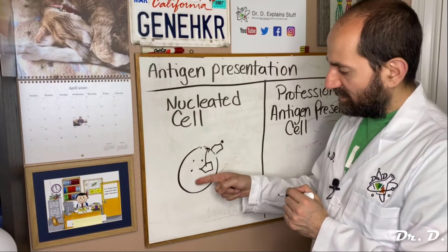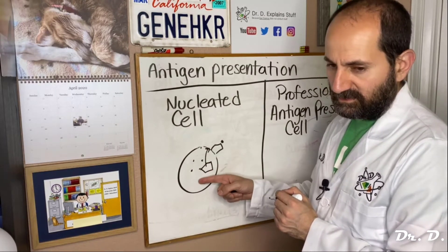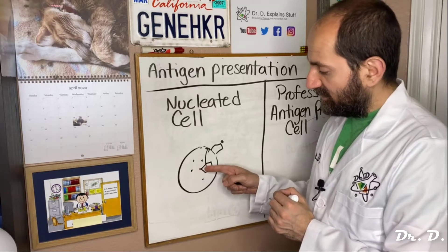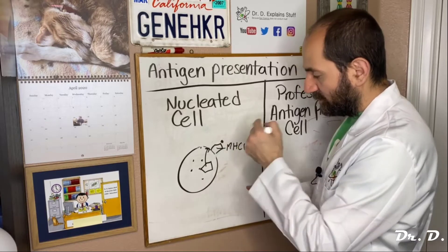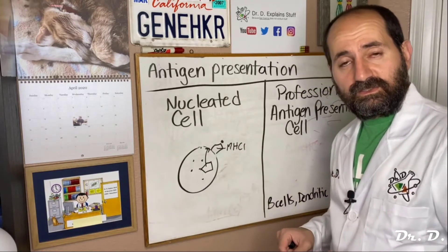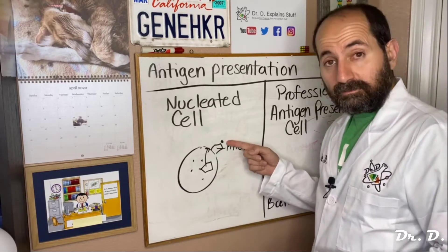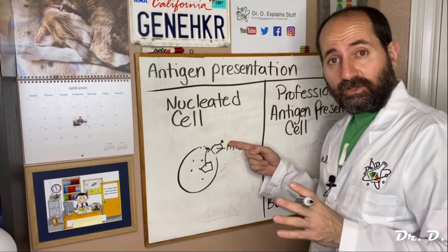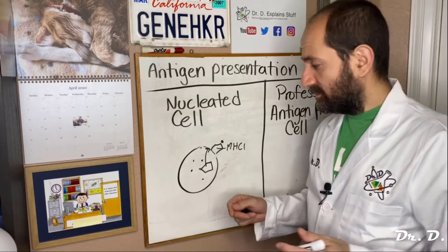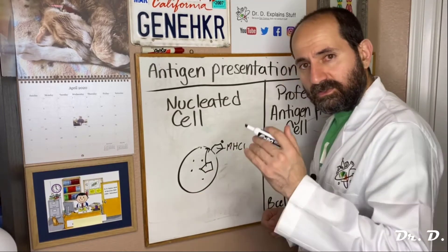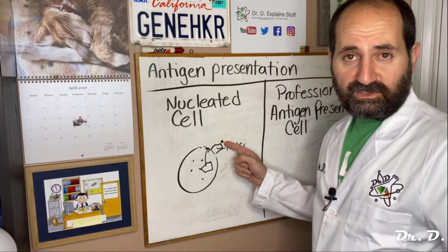That's some antigen — some protein or molecule that was inside of the cell — but was given to the trophy case MHC1 so it could present it on the outside of the cell. These are called self-antigens. These are proteins that should exist inside of your cells, and your white blood cells recognize these self-antigens and don't do anything about it.